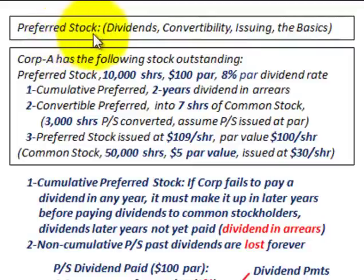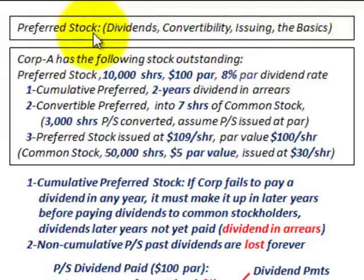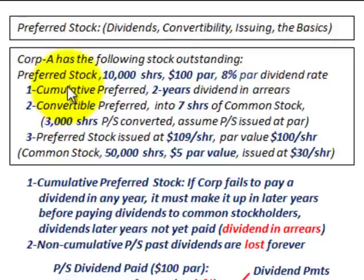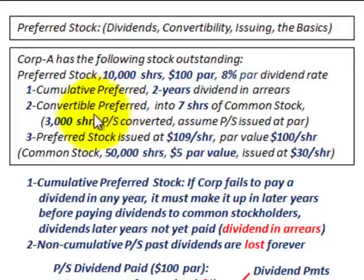What we're going to be going over here is preferred stock, and we're going to look at its dividends, convertibility, and issuing preferred stock. We're going to go through a basic example to understand what preferred stock is. We'll look at three independent situations: cumulative preferred with dividend payments, convertible preferred where we convert it into common stock, and how we would issue preferred stock.